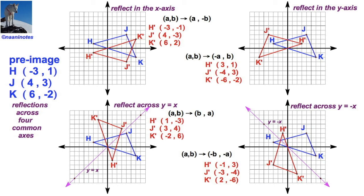You've got four common reflections, or reflections in four of our very common axes. And let's just see them one more time, reflecting across the x-axis, the y-axis, y equals x, and y equals the opposite of x. Well, I hope you have it all filled in. If you're in my class, turn it in. And if you're not in my class, I hope you enjoyed it. And in any event, for all of you, thank you for watching Nonnie Notes.